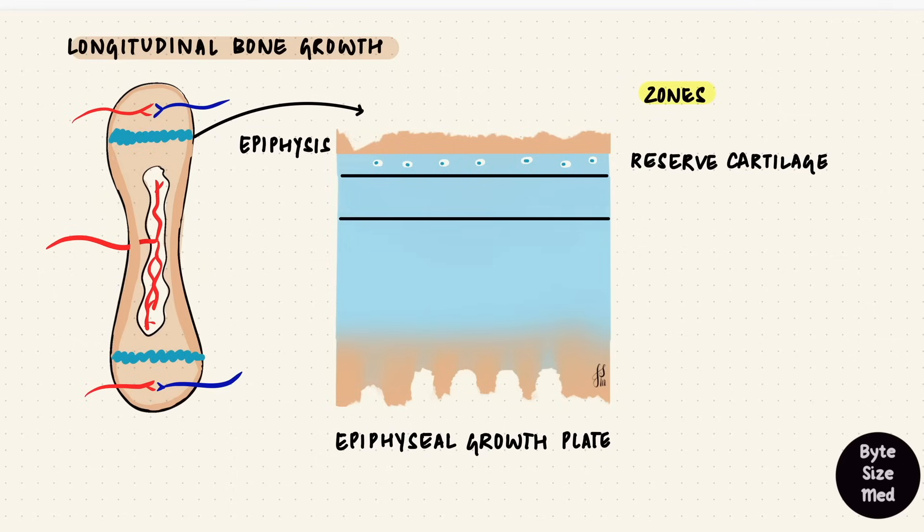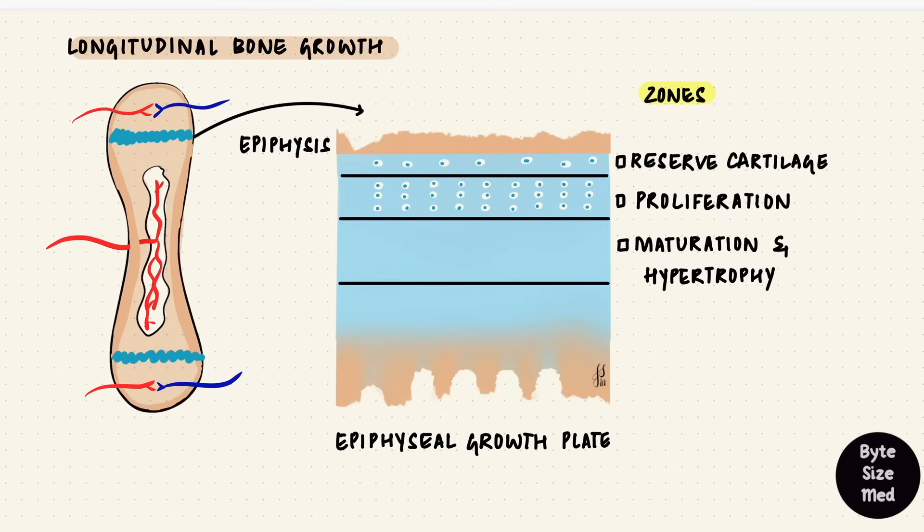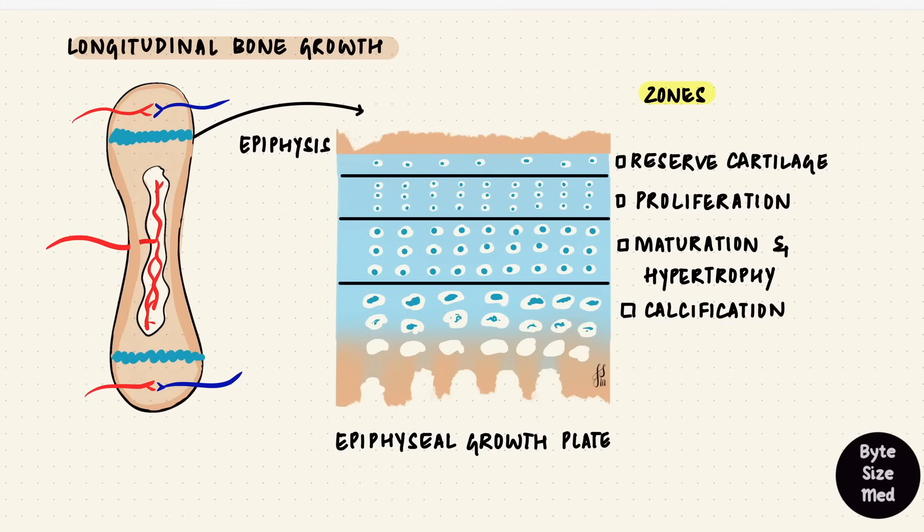Then there's the zone of proliferation. That's where the chondrocytes undergo mitosis. They proliferate and line themselves up along the long axis in parallel rows. Then we have the zone of maturation and hypertrophy. The chondrocytes get larger in size. Then they calcify the matrix. That's the zone of cartilage calcification where the chondrocytes go to die.